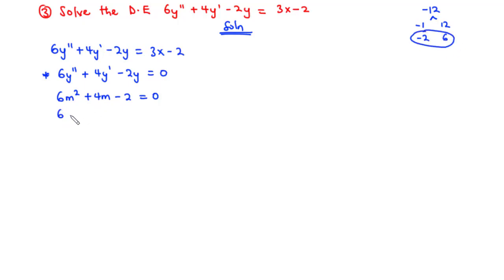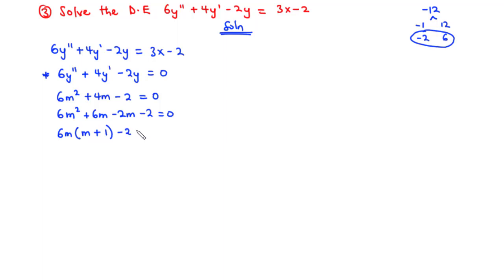We rewrite the auxiliary equation as 6m² + 6m − 2m − 2 = 0. Factoring by grouping: from 6m² + 6m we factor out 6m to get 6m(m + 1), and from −2m − 2 we factor out −2 to get −2(m + 1). The same factor (m + 1) appears inside both brackets.